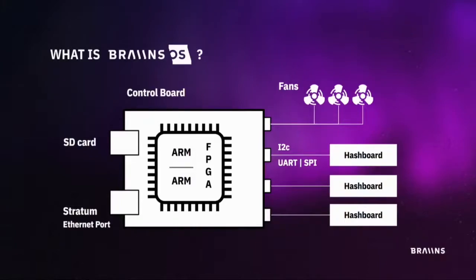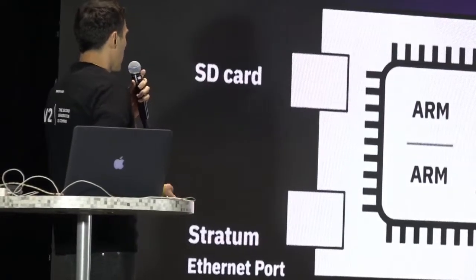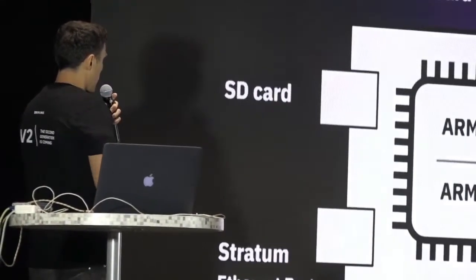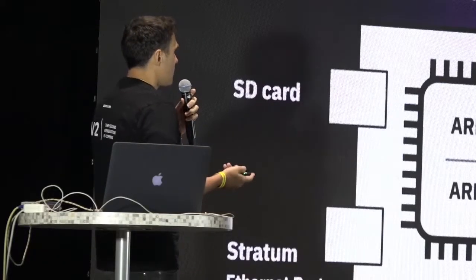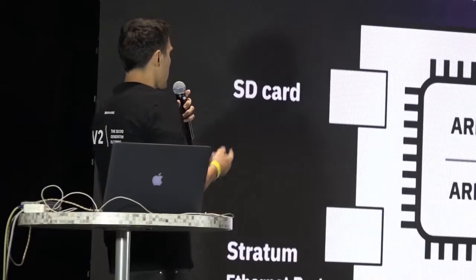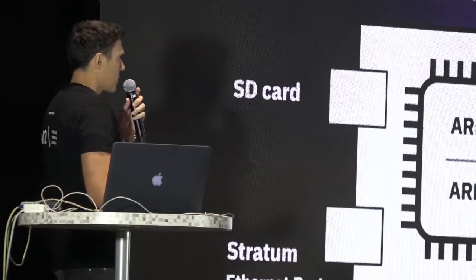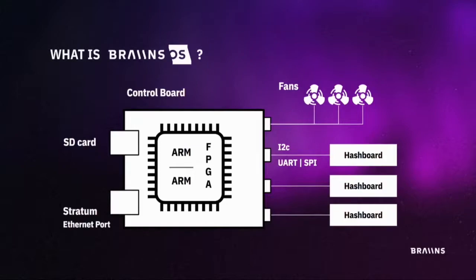In order to understand what the operating system itself is, I have to explain a little bit about the miner itself — what a typical mining device looks like these days and what open source issues we're facing. Each mining device consists usually of a control board running some kind of Linux image. It communicates with the mining pool through its Ethernet port, and it has a set of hash boards that do the actual mining work.